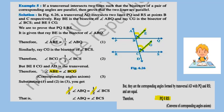In Example 5: a transversal intersects two lines such that the bisectors of a pair of corresponding angles are parallel. The yellow-shaded bisectors BE and CG are given as parallel. We have to show that PQ is parallel to RS. Transversal AD intersects PQ and RS at points B and C. BE is the bisector of angle ABQ, and CG is the bisector of angle BCS.